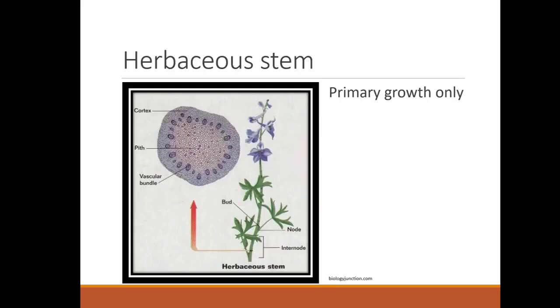Last week we talked about roots and shoots. Stems are part of the shoot system. And if you remember from last week, we talked about primary and secondary growth. Herbaceous stems — things like annuals and herbaceous perennials — have primary growth only.